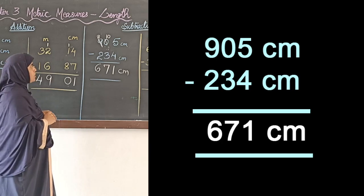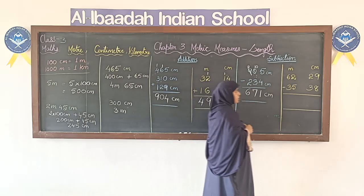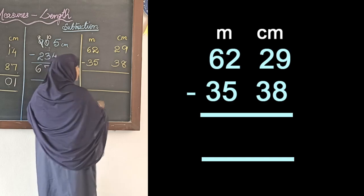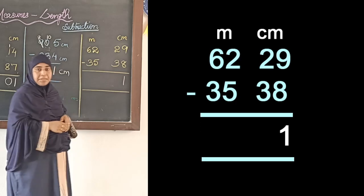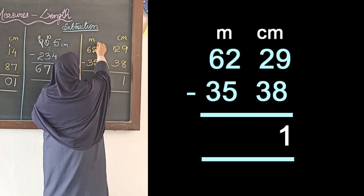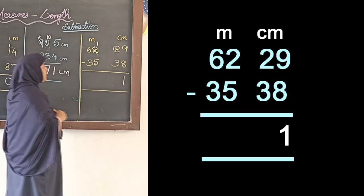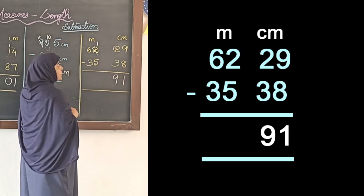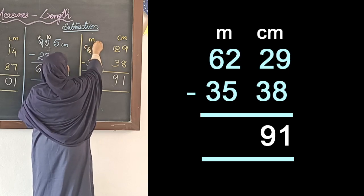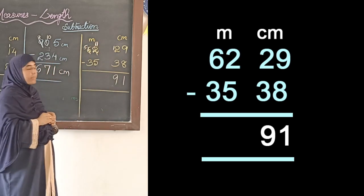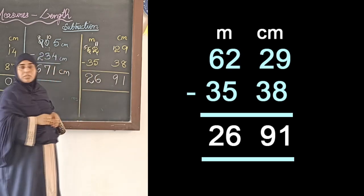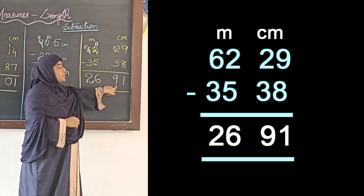Last example: subtraction with meters and centimeters. Ones place: 9 − 8 = 1. Tens place: 2 − 3 not possible, so borrow — it becomes 12, remaining 1 in next column. 12 − 3 = 9. Meters hundreds place: 1 − 5 not possible, so borrow again — it becomes 11, remaining 5. 11 − 5 = 6. Then 5 − 3 = 2. Answer: 26 meters and 91 centimeters.